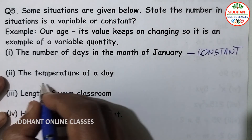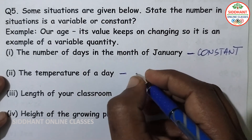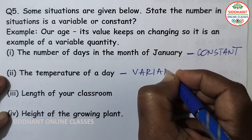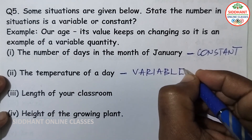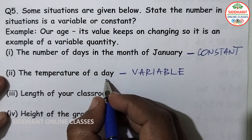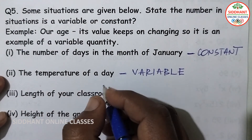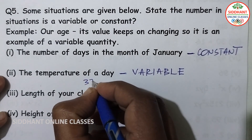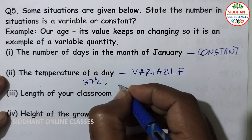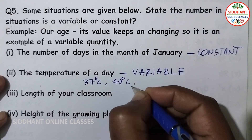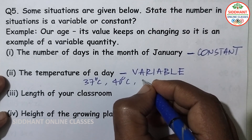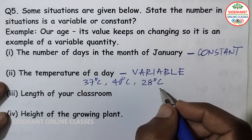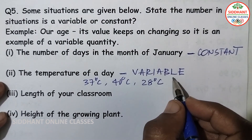Second, the temperature of a day — it is an example of a variable, because it keeps on changing. Today the temperature may be 37 degrees Celsius, tomorrow 40 degrees Celsius, and the day after 28 degrees Celsius. So the temperature of a day is a variable.